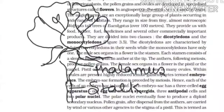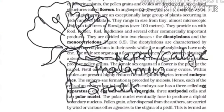Next, these are the sepals, which are known as calyx — scientifically they are known as calyx. A portion that provides protection for the attractive unit, which is the petal.